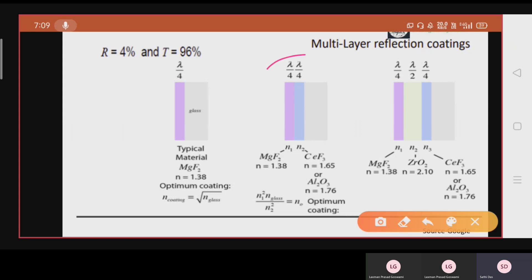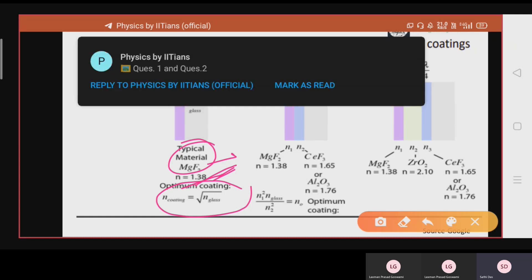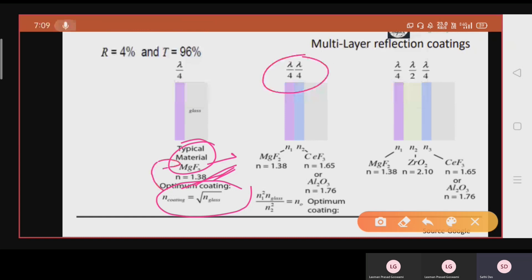The material, typical material for the single layer anti-reflection coating is MGF2, wherein the refractive index of MGF2 is 1.38, and the optimum coating thickness in coating equals to root over of n glass. Now you have to understand here why this n is 1.38, because glass here is 1.5 and this one is 1.38. So from glass to this MGF2, this is the denser medium, so there will be reflection of pi phase difference. And from this medium to glass there is the refractive index n equals to 1.38, so we don't get any phase change.